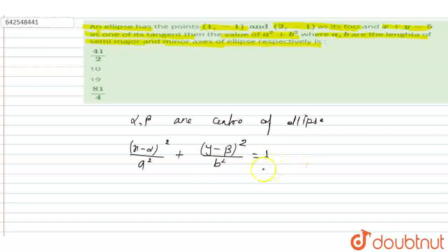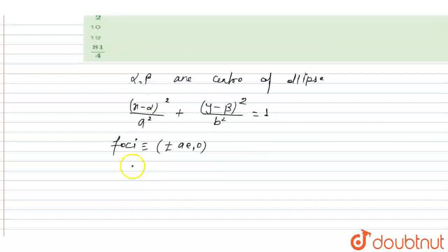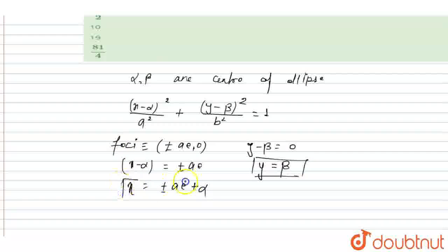This is the equation of the ellipse. The coordinates of the foci can be written as (±ae, 0). So the x-coordinate gives x − α = ±ae, and the y-coordinate gives y − β = 0, meaning y = β and x = ±ae + α.